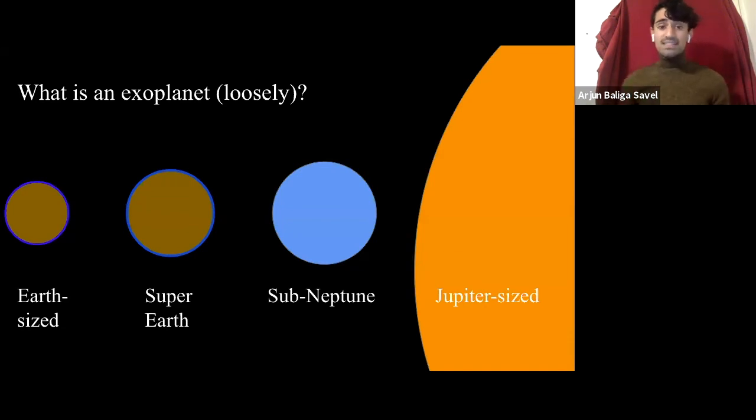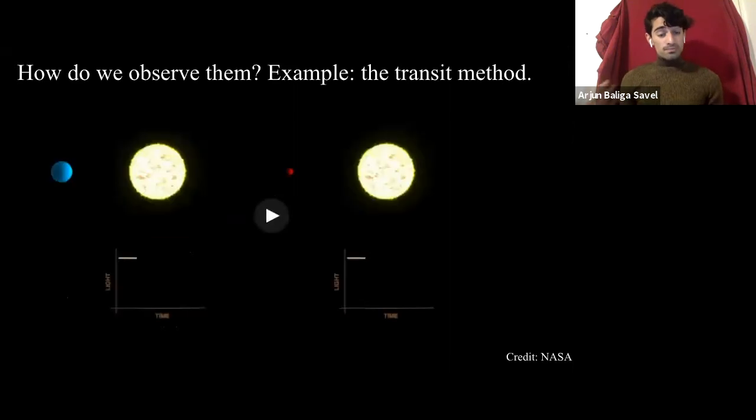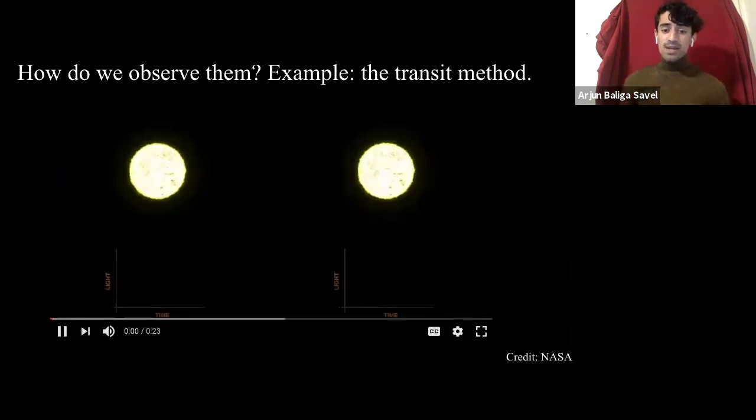They tend to fall, not neatly, but they'll fall within these classification regimes. And I'll tend to call back to this classification routinely. So now we know what exoplanets are loosely. So how do we find them? How do we observe them? There are a number of different ways to go about doing this, but today I'll be predominantly talking about my favorite and the most prolific method of exoplanet observation, which is the transit method.